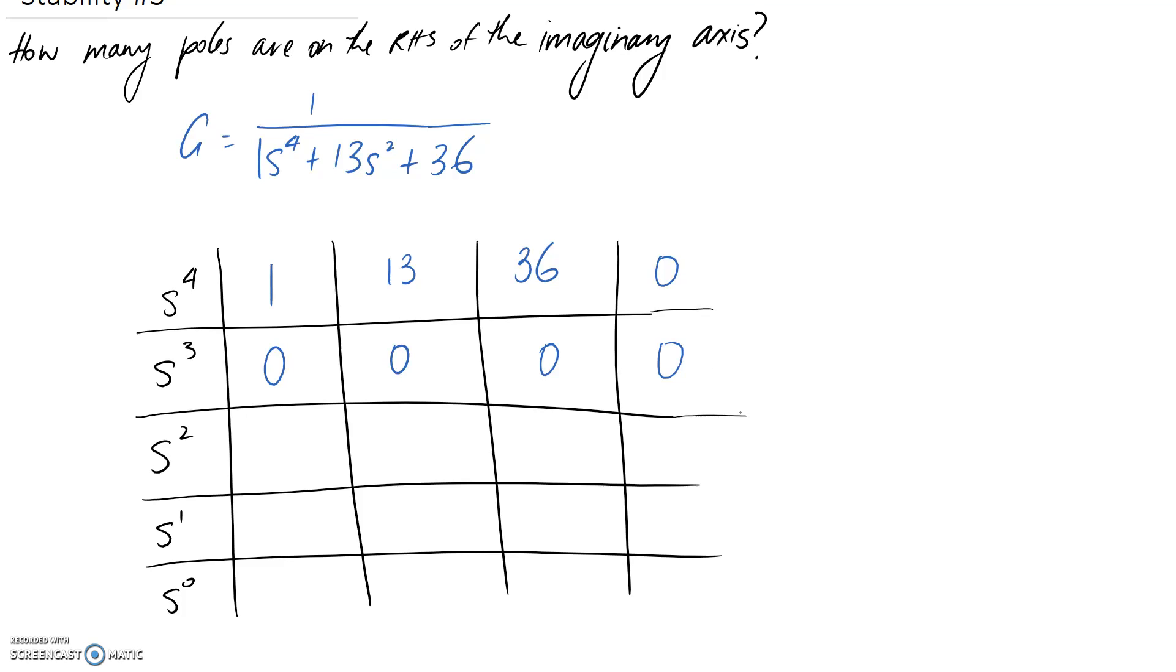So what we've ended up with here is a situation where we have a row of 0s, and this is one of the special cases that we need to deal with. So how we deal with that is we go to the row above the row of 0s, which in this case is our first one.